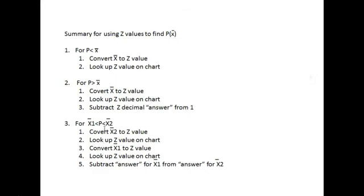And if we wanted the probability between two sampling means, we would convert each of those sampling means to a z value, look up those values on the chart, then subtract the lower value from the higher value. And if this sounds just like what we did in the last chapter, it's because it is just what we did in the last chapter.